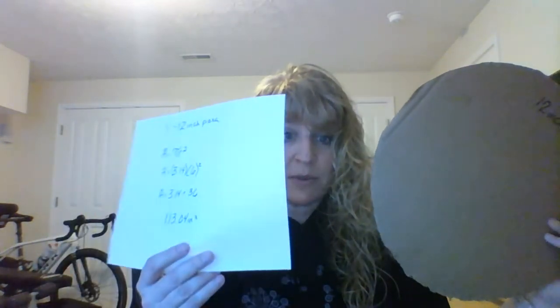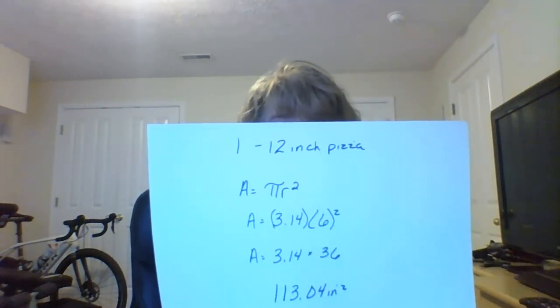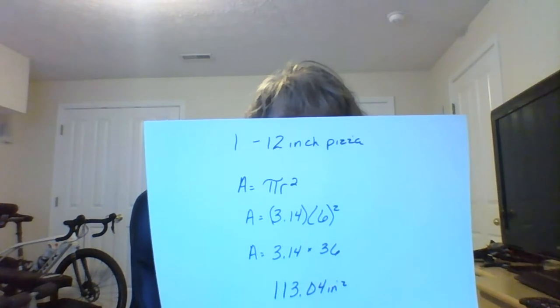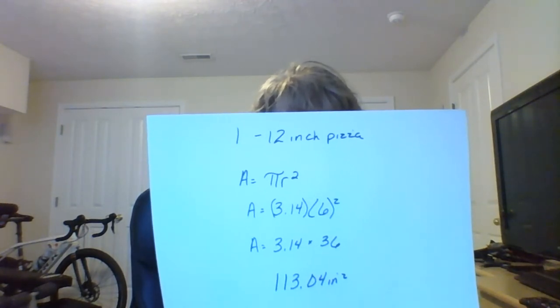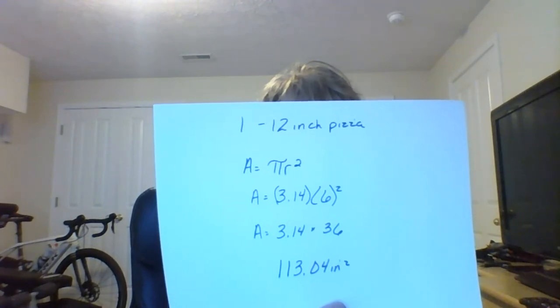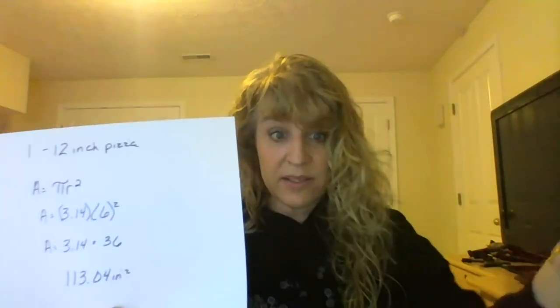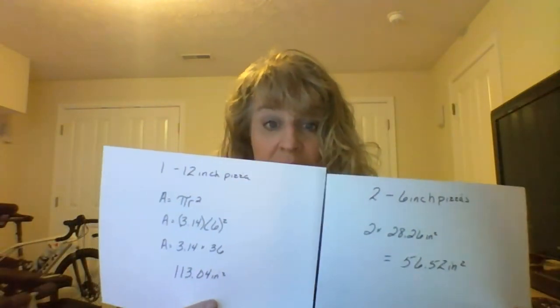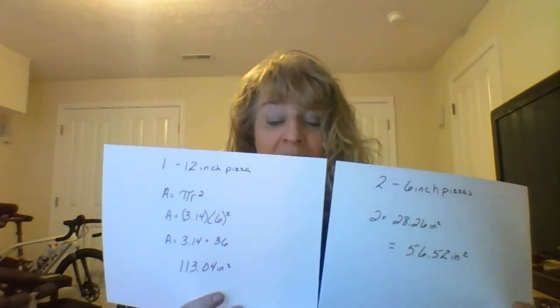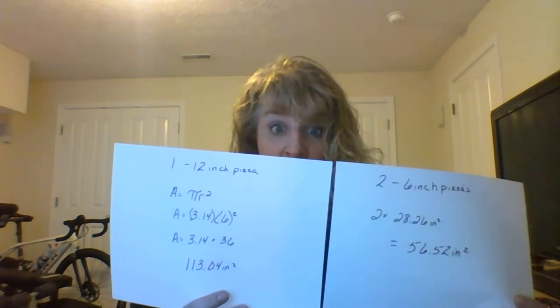We take one 12-inch pizza and apply the same formula. Area equals pi r squared: 3.14 times 6 squared, which is 3.14 times 36. And all of a sudden I see 113.04 square inches. Compare these two — do you see that two 6-inch pizzas have half as much area as one single 12-inch pizza?